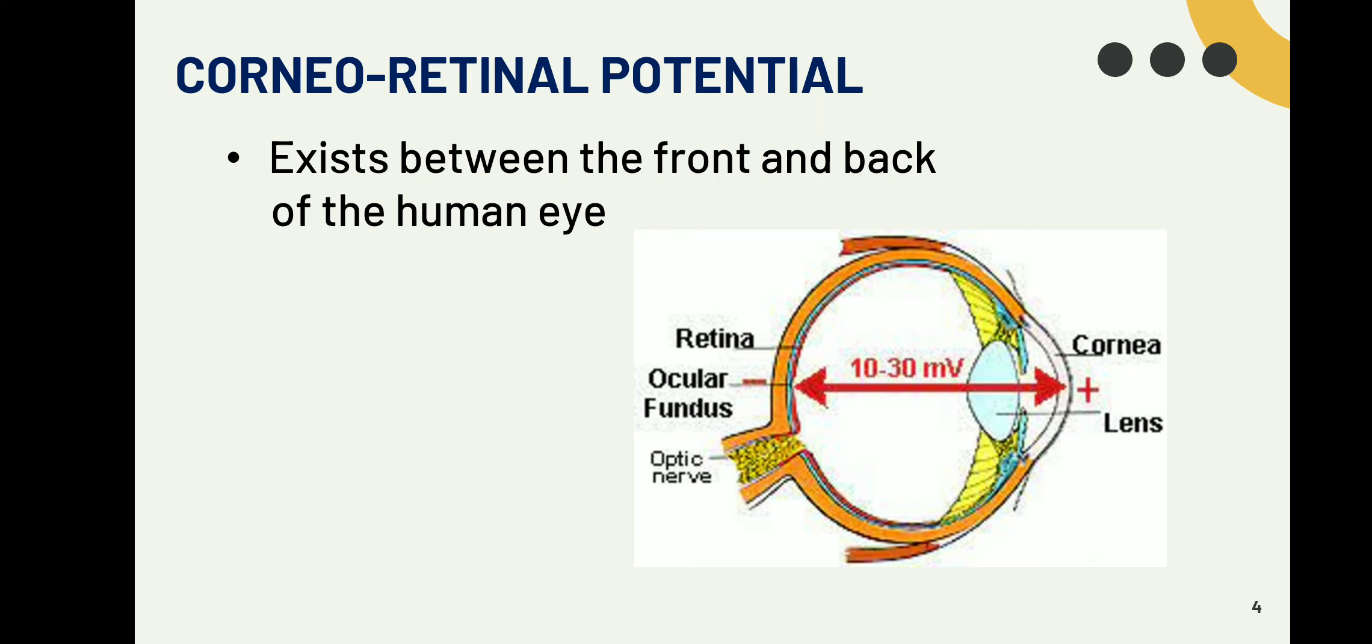From the eye anatomy we know that the front layer of the eye is the cornea and the backmost layer or third layer of the eye is the retina. So between the cornea and retina, there is a standing potential, the corneoretinal potential. To measure the corneoretinal potential, we use EOG.